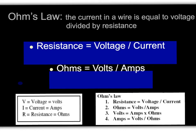In this video, we will be reviewing Ohm's law and how it relates to various electrical problems. Ohm's law is defined as: the current in a wire is equal to the voltage divided by resistance. As Ohm's law is applied, we will be looking at voltage, abbreviated V, with units of volts; current, symbol I, with units of amps; and resistance, symbol R, with units of ohms.